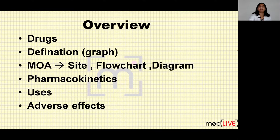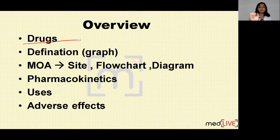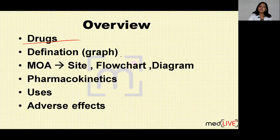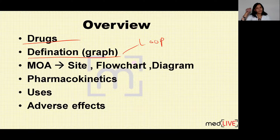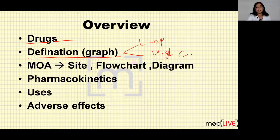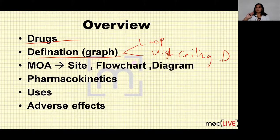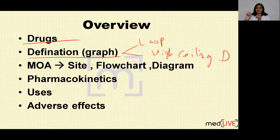So I have explained the three drugs that come under this category — furosemide, torsemide and bumetanide. And the definition: why they are known as loop diuretics — because they act on loop of Henle; why they are known as high ceiling diuretics — because the dose is directly proportional to diuresis for a long time, and after that it becomes constant. So ceiling is high.